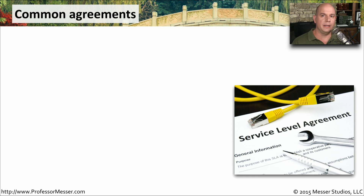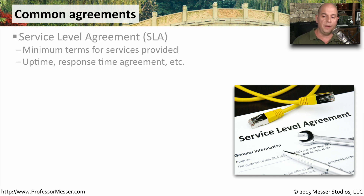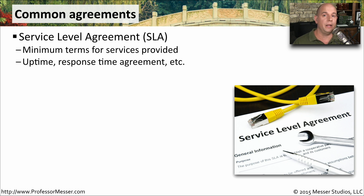Security policies and network policies are important internal documents. But if you're working with a third party, there are a number of agreements that have to be used. One of these might be a service level agreement. If you're acquiring services from a third party, you need to document exactly what level of service you're expecting — for example, a certain amount of uptime and throughput from a WAN provider. If those standards aren't met, the service level agreement needs to detail what the penalties might be to the service provider for not meeting these minimum service levels.